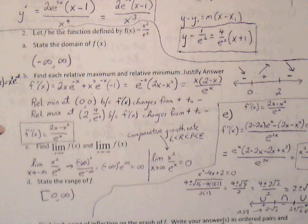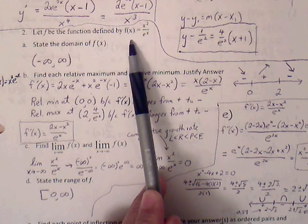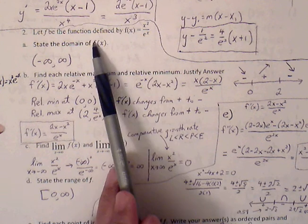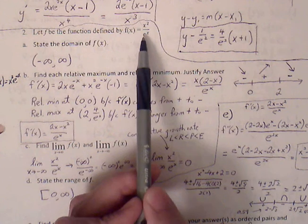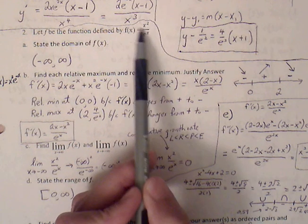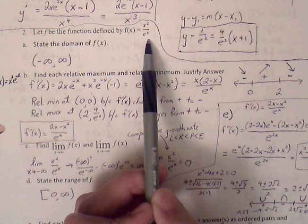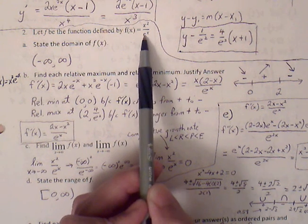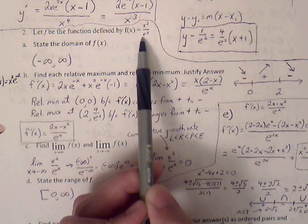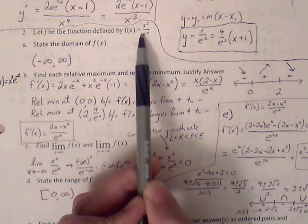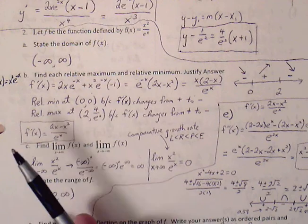Number 2 is a curve sketching problem. Let f(x) = x² / e^x. Part a asks us to find or state the domain. The domain is basically where the graph exists. The numerator can exist anywhere. For the denominator, e^x is never equal to zero — it will never cross the x-axis. So because there are no restrictions in the numerator or denominator, our domain is all real numbers from negative to positive infinity.